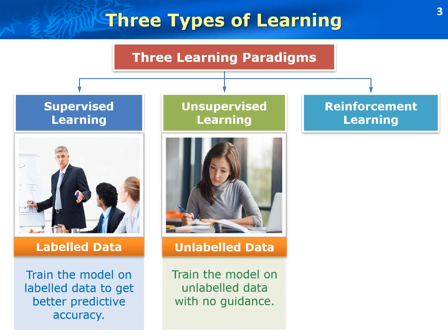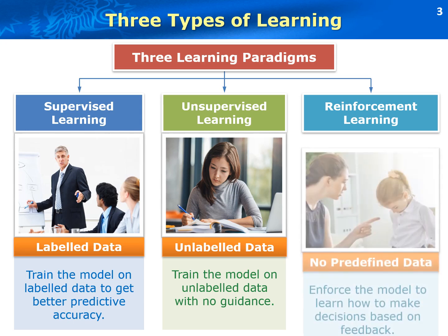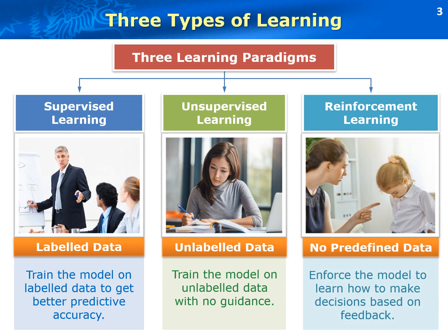Unsupervised learning is performed on unlabeled data. We train the model on unlabeled data without any guidance. The goal for unsupervised learning is to discover the underlying patterns or structures of the data in order to gain more knowledge about the data. Reinforcement learning is all about learning by interacting with an environment to maximize the reward. Reinforcement learning enables an agent to learn how to make decisions within an environment using feedbacks from its own actions and experience.